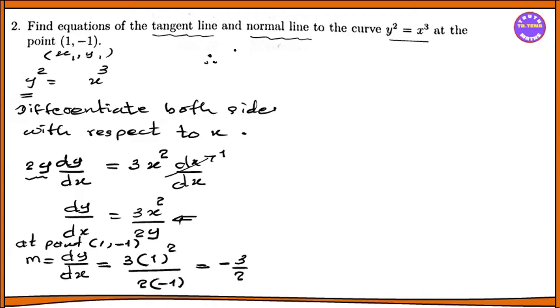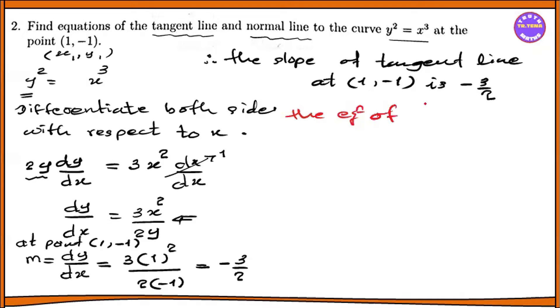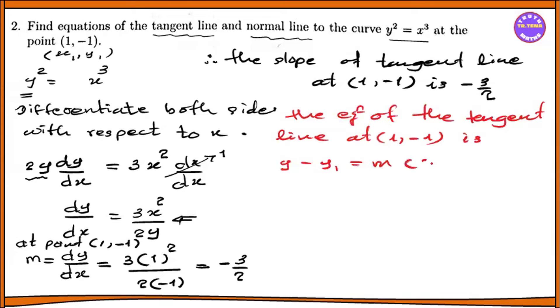Therefore, the slope of the tangent is minus 3/2. The equation of the tangent line at (1, -1) is: y minus y1 equals m times (x minus x1).